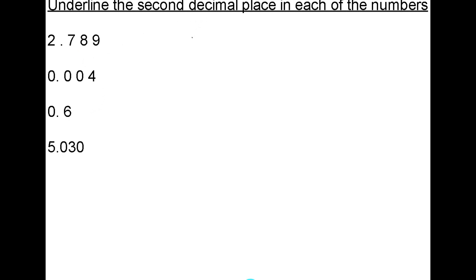If I want to underline the second decimal place in each of these numbers, I'm going to look at the digit which is two places to the right of the decimal point. In the first question, that's going to be eight. The second question, zero. In the third question, there isn't actually a second decimal place — I would have to write zero in and underline it. In the last one, it would be three.